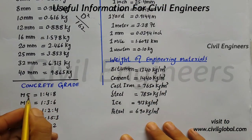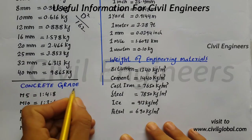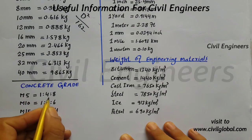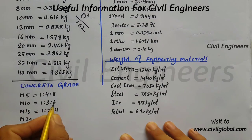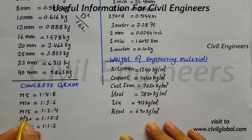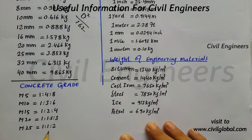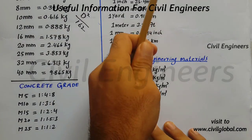Another useful piece of information for civil engineers is concrete grades. M5 grade has a mix ratio of 1:4:8. M10 has a ratio of 1:3:6. M15 has a ratio of 1:2:4. M20 has a ratio of 1:1.5:3, and M25 has a ratio of 1:1:2.